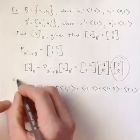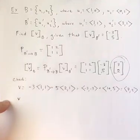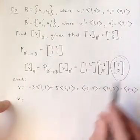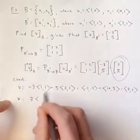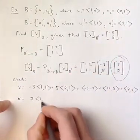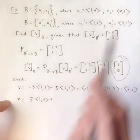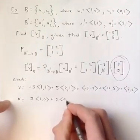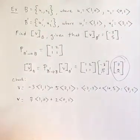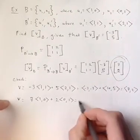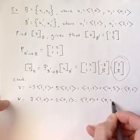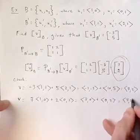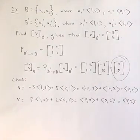And then if I wanted to do that for the other basis, notice it should be 7 times this vector plus 2 times that vector. And of course, based on what we said before, we know that this is still going to be the vector 7, 2. I'll just work through those details really quickly. But that shows you that you ended up with the same v in both scenarios.